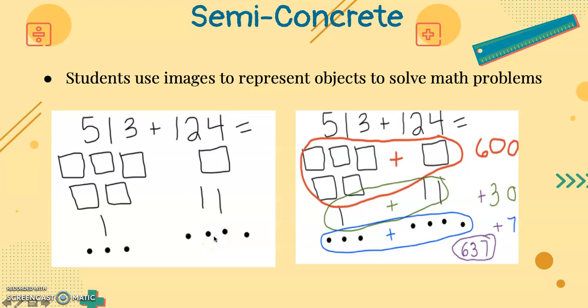Now you would combine the like objects or images. And now we see 600 plus 30 plus 7 is 637. And that's how you do the semi-concrete level for addition.